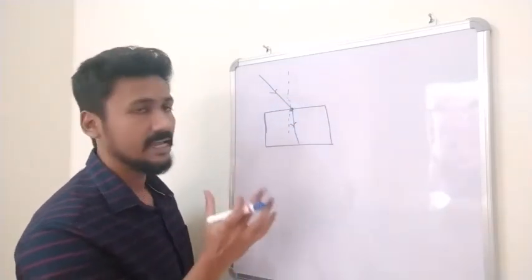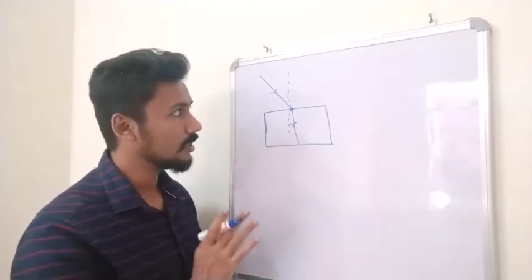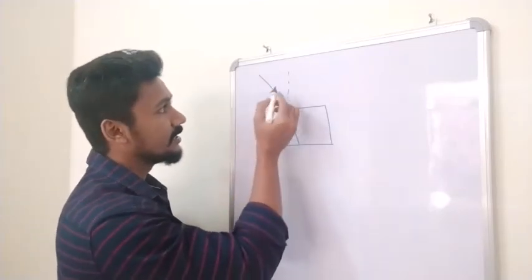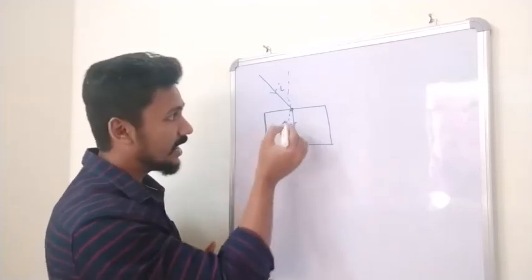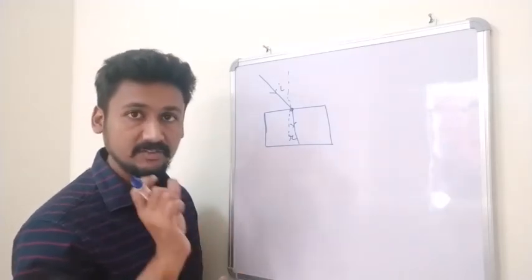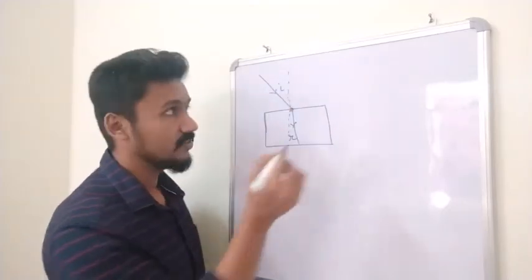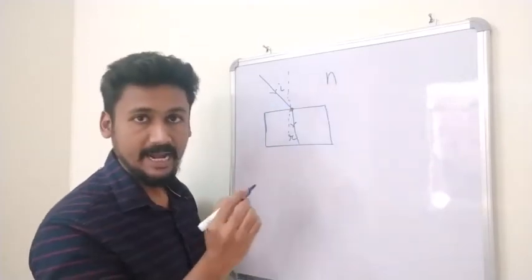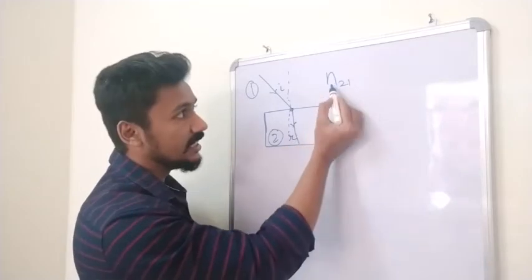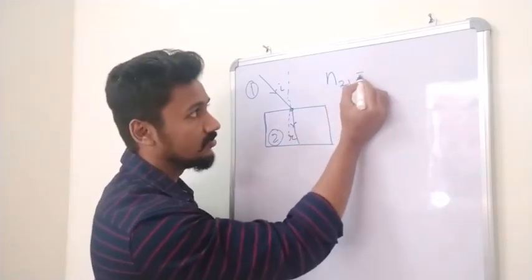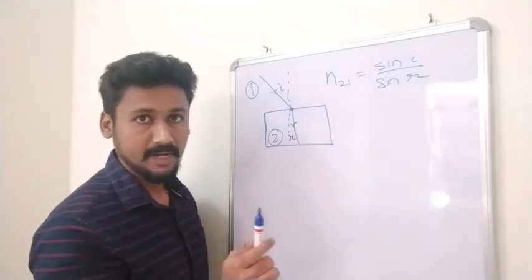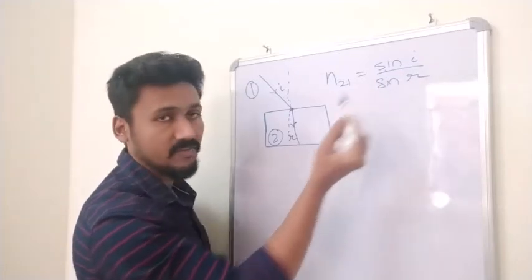To measure angles, we draw the normal — the perpendicular — and then we can measure the refractive index. The angle between the incident ray and the normal is called the angle of incidence (i), and the angle between the refracted ray and the normal is called the angle of refraction (r). Refractive index is denoted by n, written as n21, which equals sin(i) / sin(r).